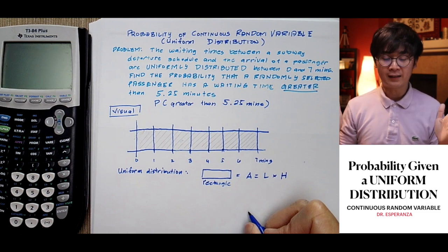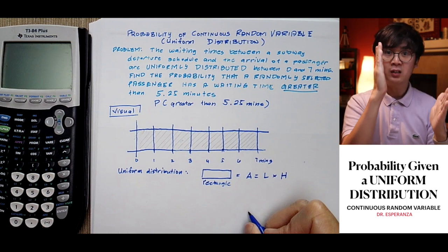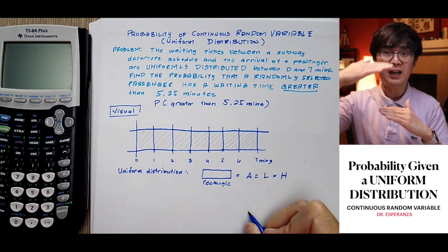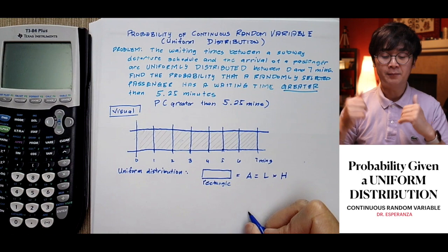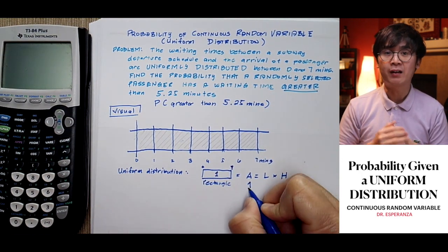After we get our visual, we need to find the height of our distribution. Since the vertical partition is equally distributed, we just need to find the height. To do that,